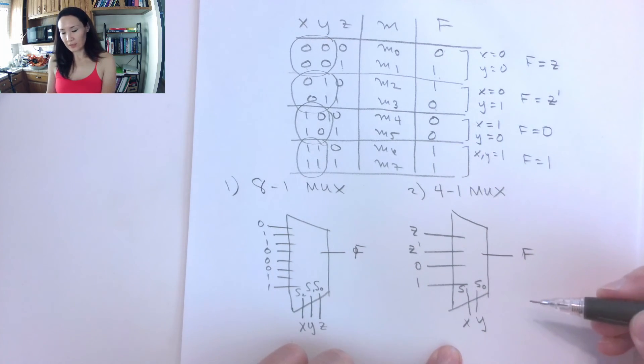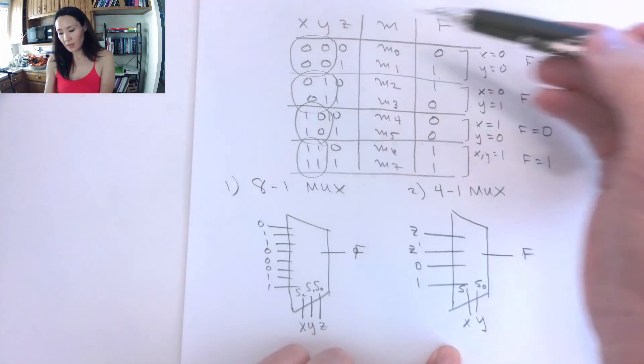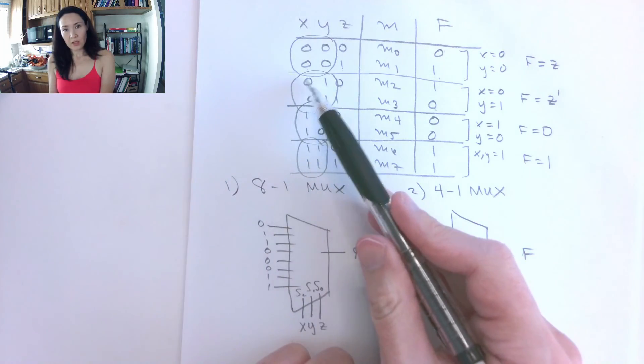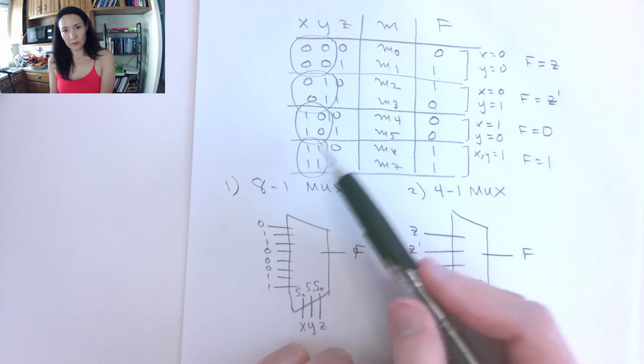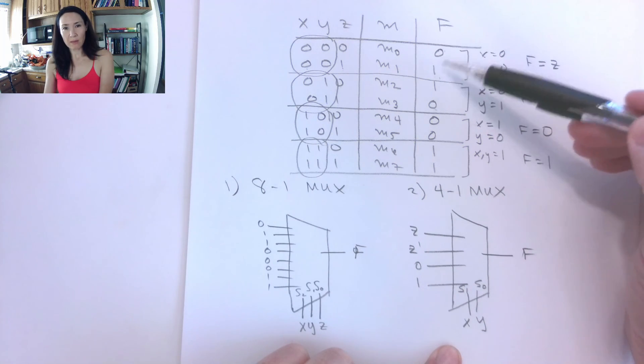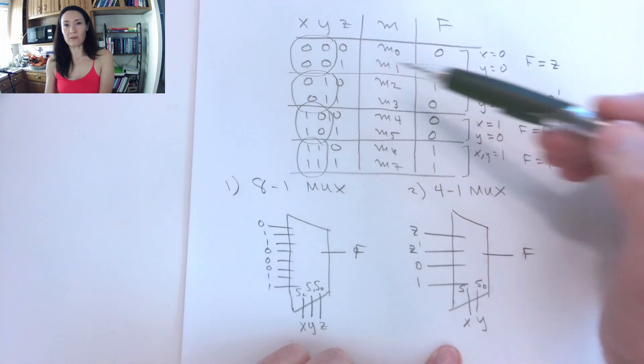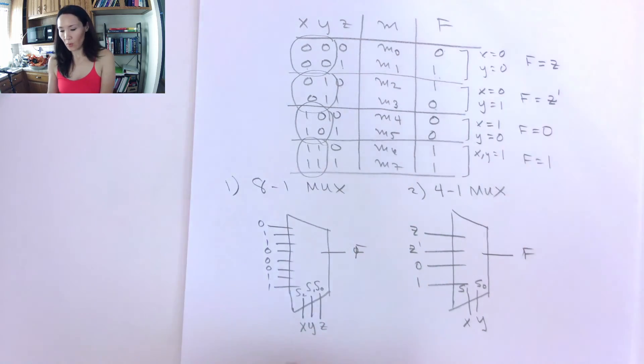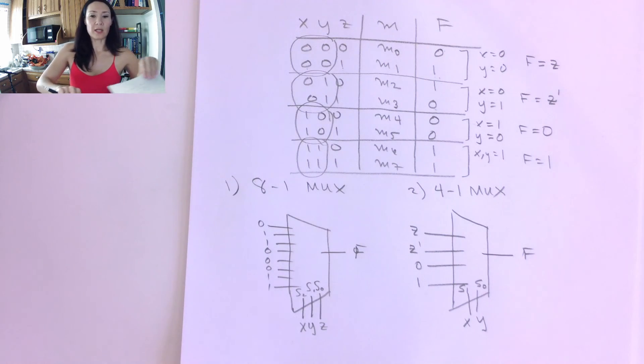So the 4 to 1 multiplexer, first thing, you make your truth table. You split it into groups of 2 rows and then figure out how to make this from one of the inputs or with a 0 or a 1. So let me know if you have questions about this. And I'll give you a practice problem so you can try.